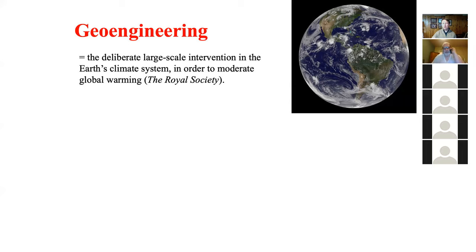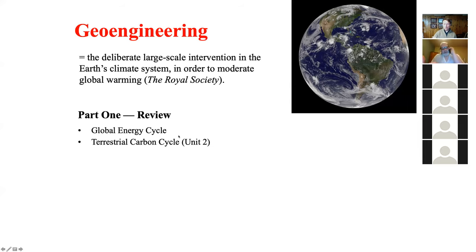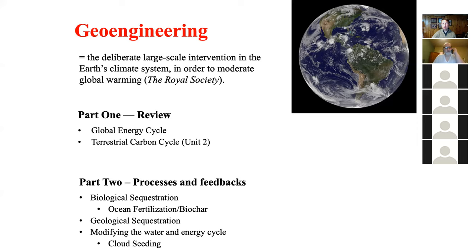Let's start thinking about some of the ways that we are currently geoengineering. The first thing I want to do is go back and review our global energy cycle and our global carbon cycle. These two cycles are very intertwined for our global climate. We're going to talk about carbon sequestration and modifying the water and energy cycle.